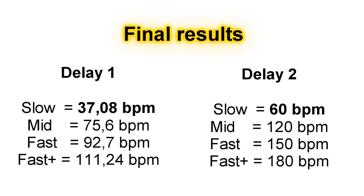The problem is those BPMs are very slow. If you try to tap tempo at 37.08 BPM you're likely to get it wrong. So we can multiply those numbers to get faster tempos — times 2, times 2.5, times 3. That gives us for delay 1: approximately 74.16, 92.7, and 111 BPM; and for delay 2: 120, 150, and 180 BPM. Now we have tempos that are much faster and much more usable.